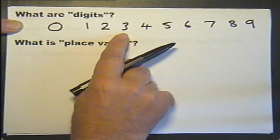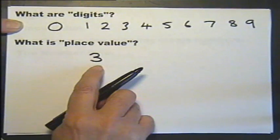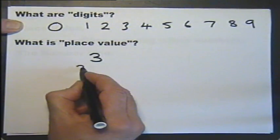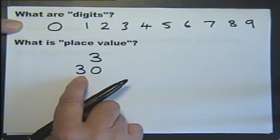So let's consider the digit 3. As it stands, it is not only the digit 3, but the number 3. However, if we write it like this, we get the number 30.